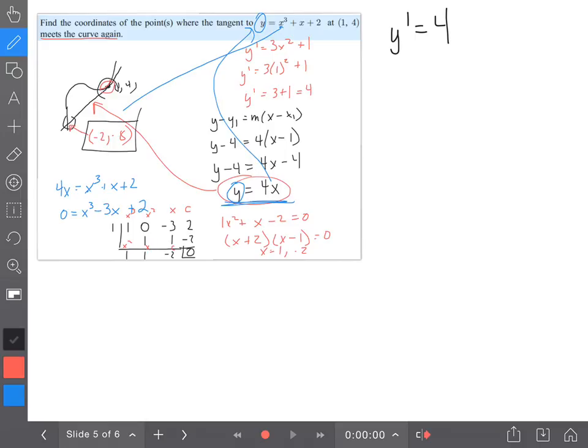But if I want the normal, I got the derivative y' = 4. To find the normal, I need the negative reciprocal of that, so the slope of the normal is going to be -1/4, negative flip it. Now I'm going to write an equation: y - y₁, which is 4, equals -1/4 times (x - x₁).